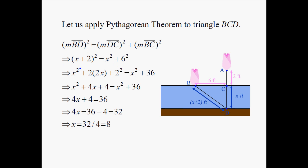BD is x plus 2, so we have (x+2) squared. DC is x, so x squared. BC is 6, so 6 squared. Now applying algebra — using the formula (a+b)² = a² + 2ab + b² — the left-hand side becomes x squared plus 4x plus 4. The right-hand side is x squared plus 36. The x squared terms cancel, leaving 4x plus 4 equals 36.